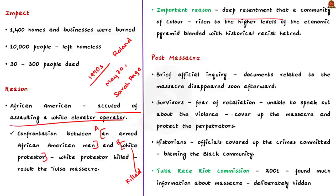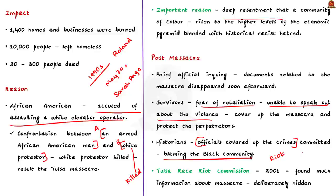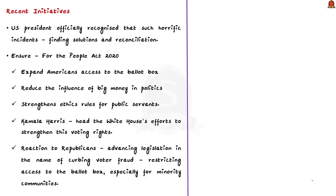Shortly after the massacre there was a brief official inquiry, but the documents related to the massacre disappeared soon afterward. Survivors, gripped by fear of retaliation, were unable to speak out and had no option but to contend with an elaborate cover-up protecting the perpetrators. For years the massacre was barely mentioned in government circles, newspapers or textbooks. Tulsa city officials covered up the crimes and deliberately shifted the narrative by calling it a riot and blaming the Black community. It was only in 2000 that the massacre finally appeared in Oklahoma public schools curriculum.